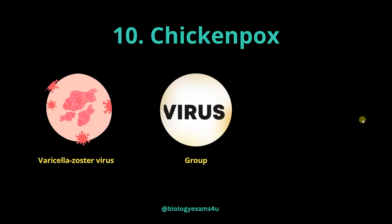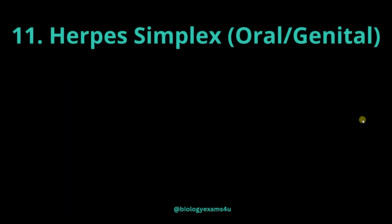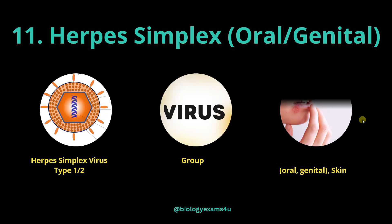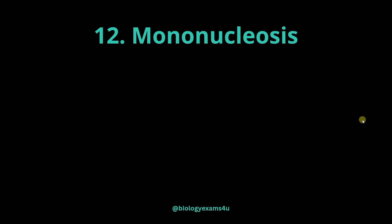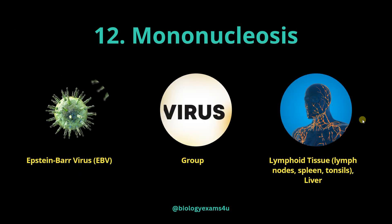Chickenpox is caused by chickenpox virus or varicella-zoster virus and primarily infects skin and mucous membranes. Herpes simplex is caused by herpes simplex virus type 1 and 2, primarily affecting mucous membranes — especially oral and genital membranes — and also skin. Mononucleosis is caused by Epstein-Barr virus and affects lymphoid tissue, lymph nodes, spleen, tonsils, etc., and also the liver.